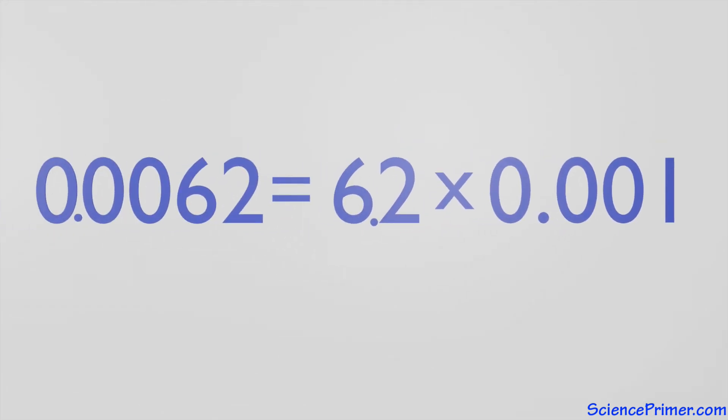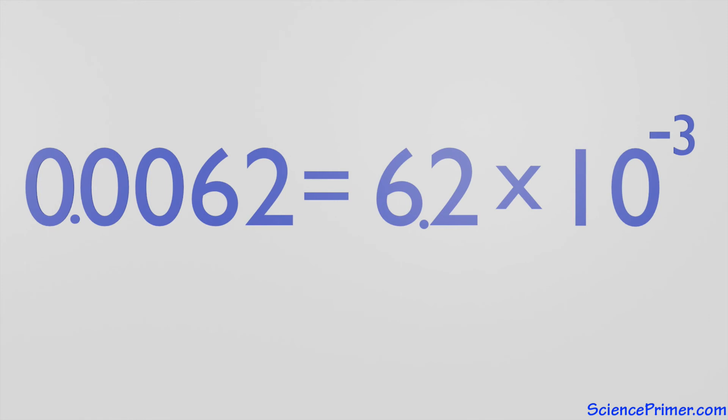Therefore, it is also equal to 6.2 times 10 to the negative 3. Working with numbers like 348 and 0.0062, both of which are relatively easy to write in standard notation, help show the relationship between standard and scientific notation, but they do not really demonstrate the utility of the system.